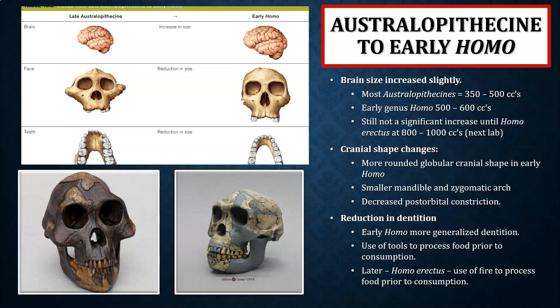This slide looks at some of the changes from late australopithecines into early members of genus Homo. The three main changes are: cranial capacity and brain size will increase slightly, though we won't see a significant increase until Homo erectus. Most australopithecines, both gracile and robust forms, have a cranial capacity between about 350 to 500 cc's, within the range of modern chimpanzees. Early genus Homo shows a slight increase to about 500 to 600 cc's.